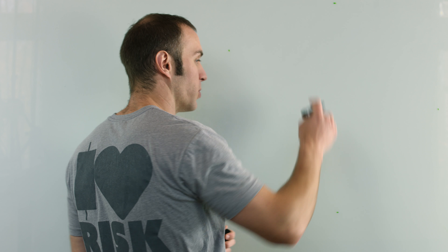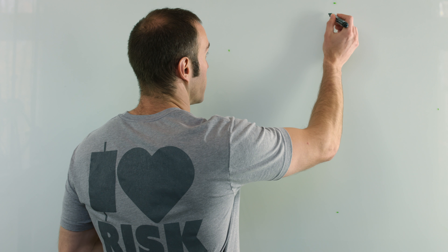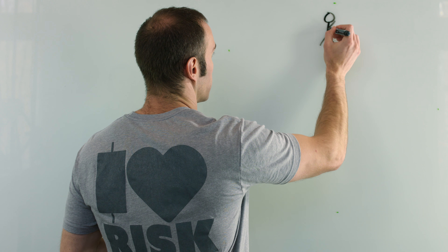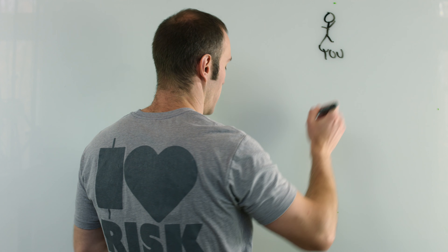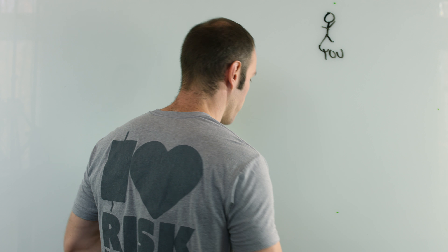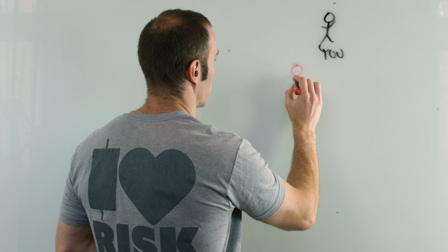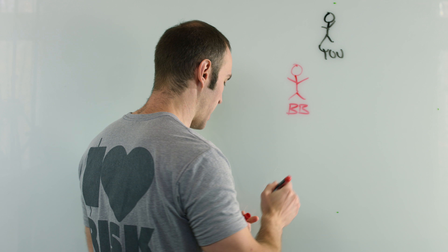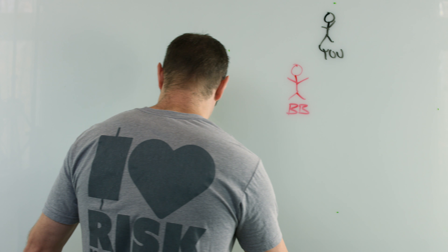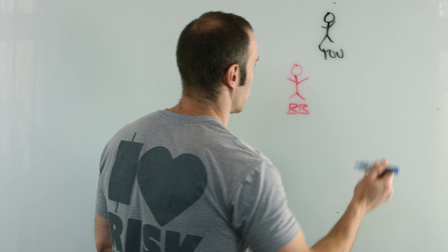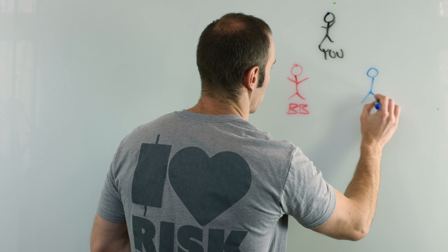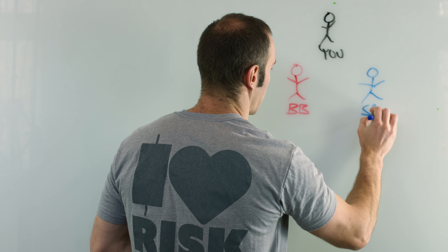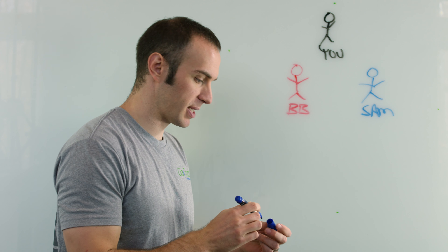So, inside information — what do I mean by that? Let's take a look at three people. It's you up here, then you have Billy Bob, and over here you have Sam. So you have Billy Bob and Sam.